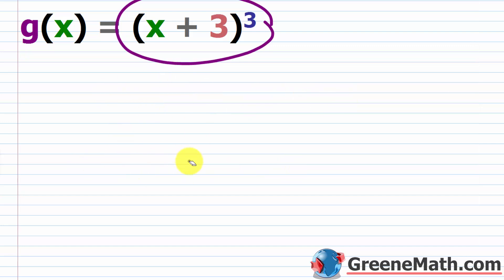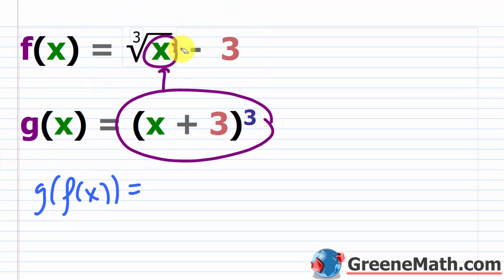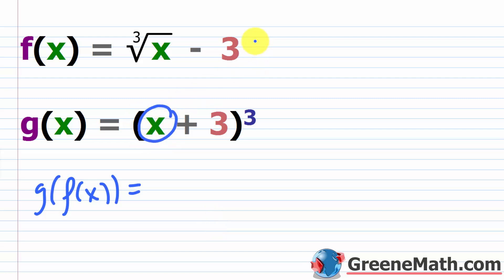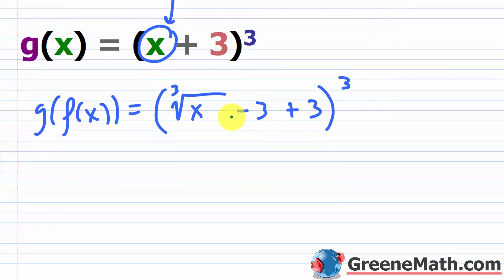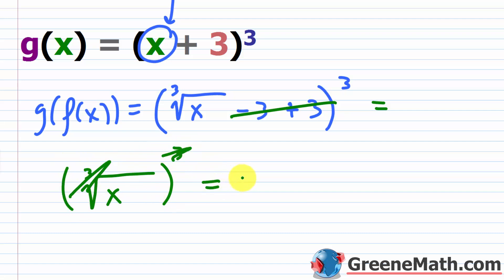So what about g of f of x? Starting with g of x, I'm going to plug in f of x for x. So inside the parentheses you'd have the cube root of x minus 3, then plus 3, and the whole thing is cubed. We have minus 3 plus 3, which is 0. So this becomes the cube root of x, cubed — and again, the exponent cancels with the index, leaving just x. So in both cases f of g of x is x and g of f of x is x. Because both conditions were met, these functions are inverses.